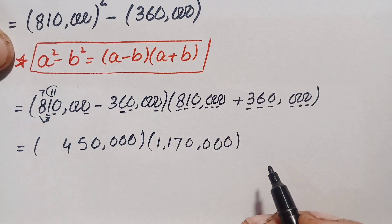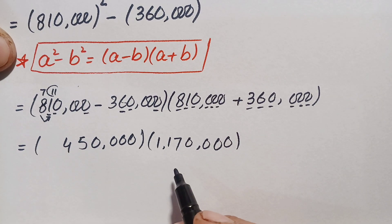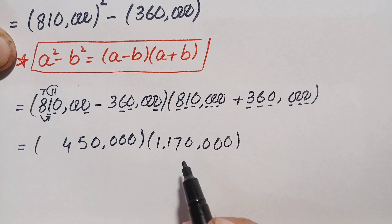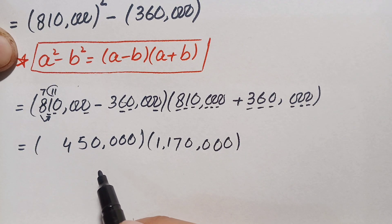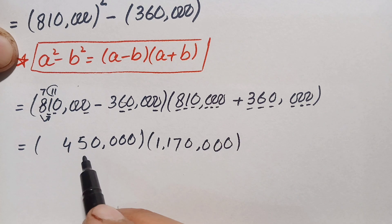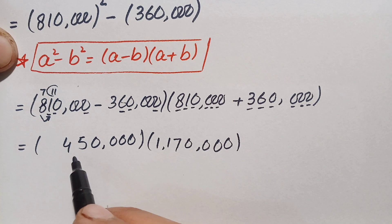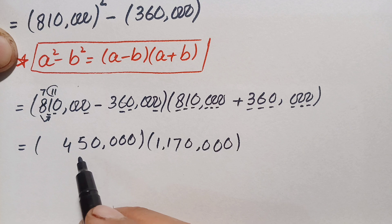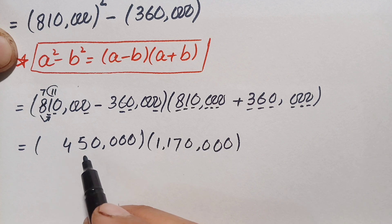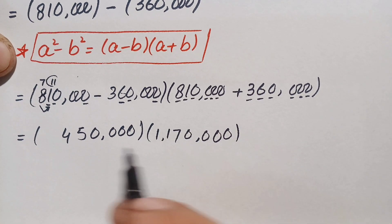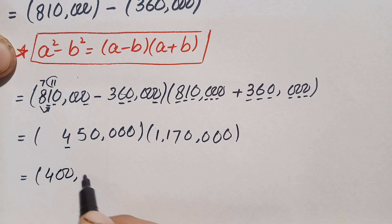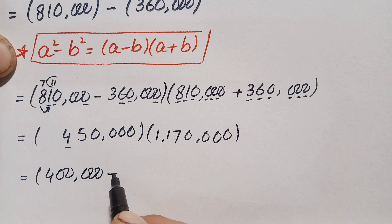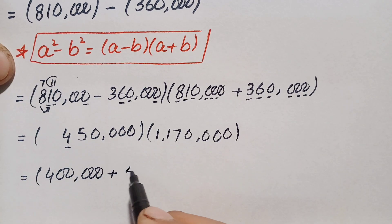Now we need to multiply 450,000 by 1,170,000 without a calculator and without standard multiplication. We will change one number to the sum of its place values, choosing the one with fewer non-zero digits. There are two non-zero digits in 450,000, so we write it as the sum of place values: 400,000 plus 50,000.